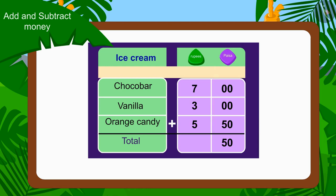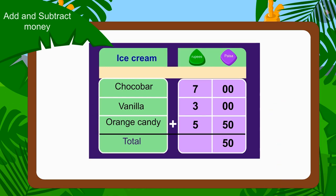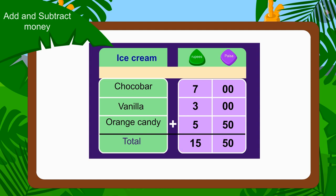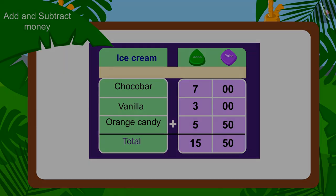Now we will add the amount of paise first. Can you tell the total amount of paise? Right — 50 paise. Then we will add all the rupees. What is the total amount? Yes, 15 rupees. In this way, Raju and Bablu will have to pay 15 rupees 50 paise to Babban.